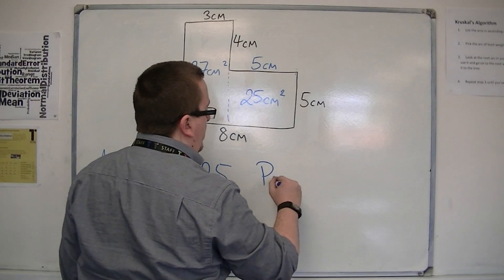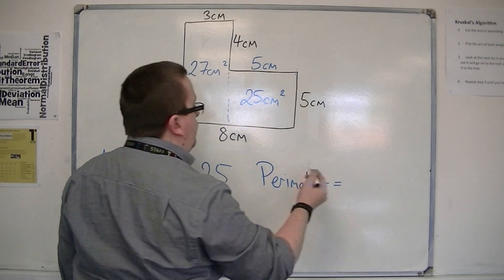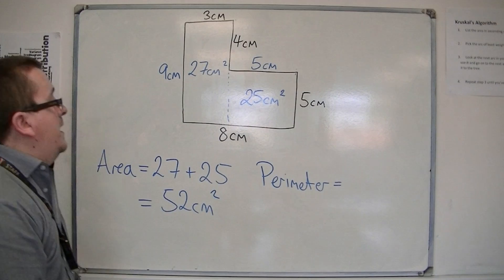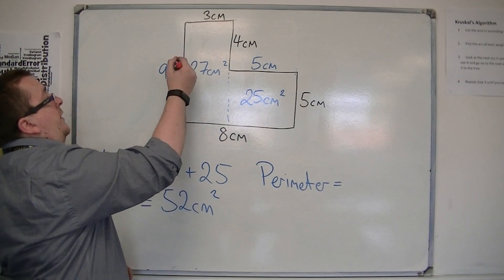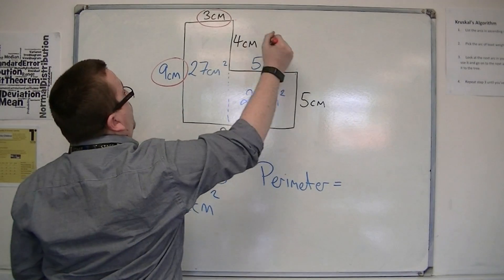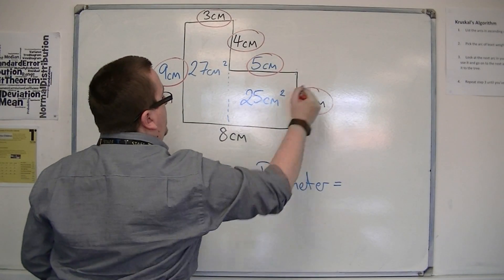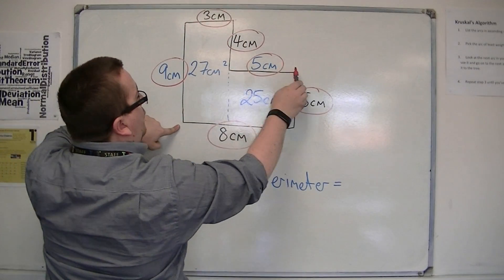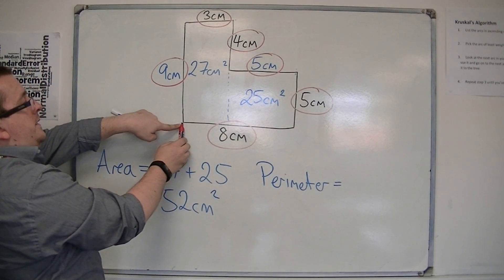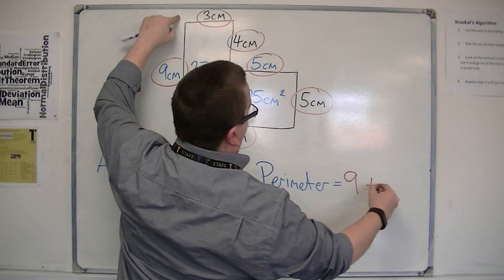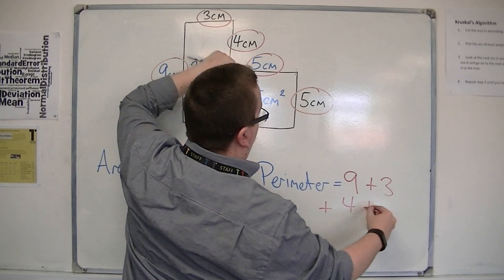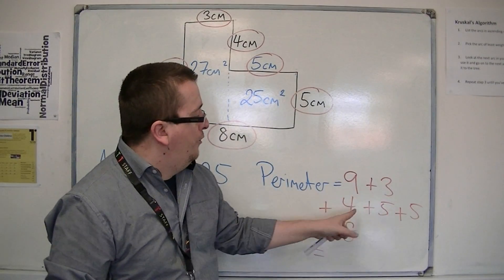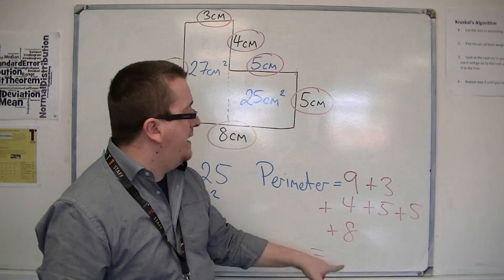If I want to find the perimeter, then finding those missing lengths initially is really a bonus, because it means I just need to add up all the way around the shape — all the lengths that are marked. So: nine centimetres, three centimetres, four, five, five, then back eight. Nine plus three plus four plus five plus five plus eight gives twelve, sixteen, twenty-one, twenty-six, thirty-four.